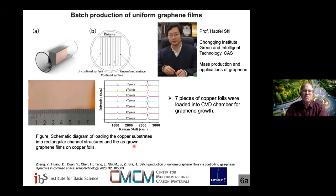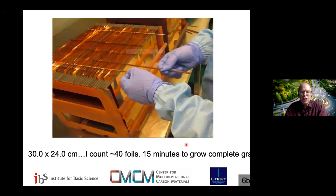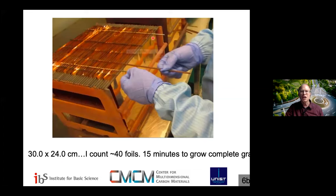Let me start with this image of scale production of graphene. Professor Hafei Shi kindly gave me permission to show what's on this next slide — a recent publication from his group. There are enterprises around the world growing graphene at this scale. These are 30 by 24 centimeter graphene sheets, roughly 40 of them packed into a large oven. In 15 minutes, CVD graphene can coat both sides of copper foils, then slide the tray out and insert another after a brief purge and grow again.